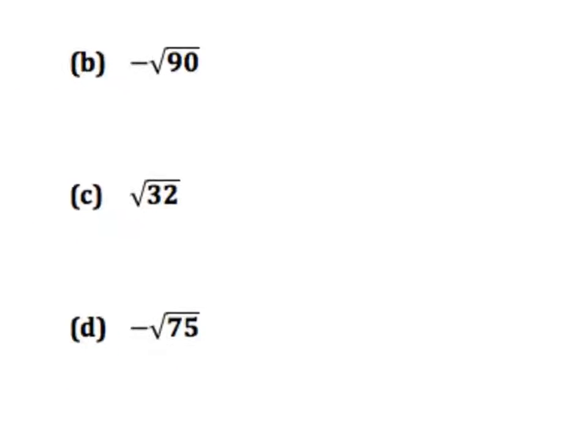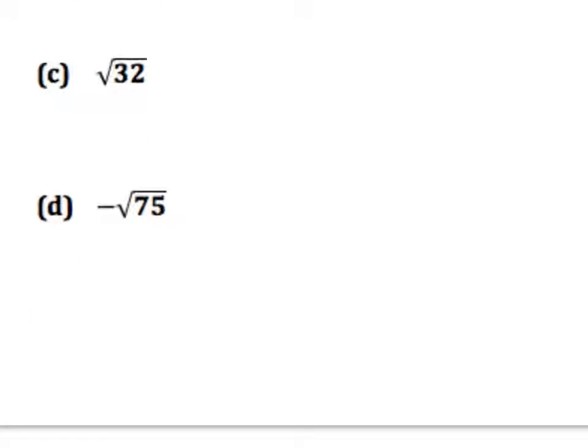With C, you need to estimate the square root of 32. So think about what are the perfect squares that are the closest to 32. So 25 is the closest perfect square that's less than 32, and 36 is greater than 32. The square root of 25, then, is 5, and the square root of 36 is 6.